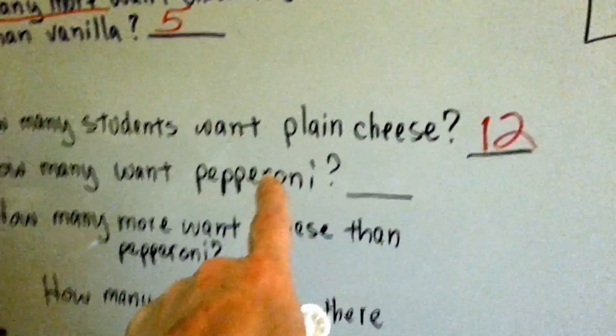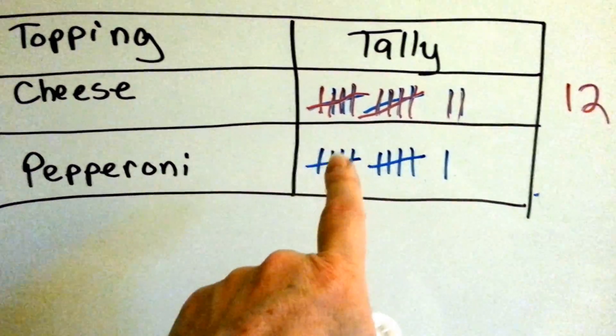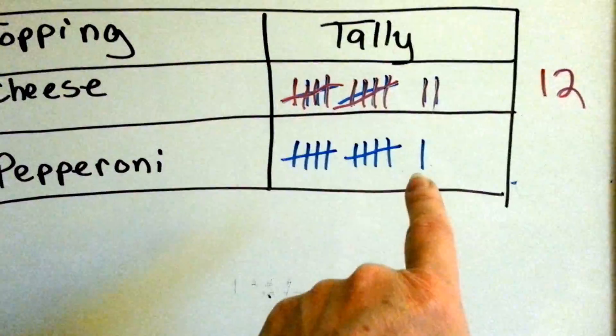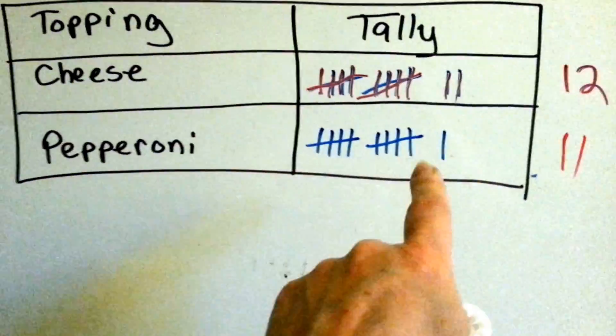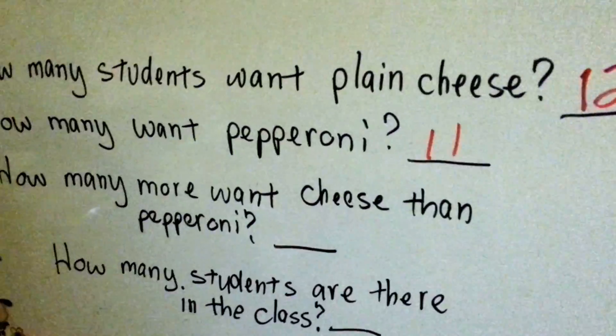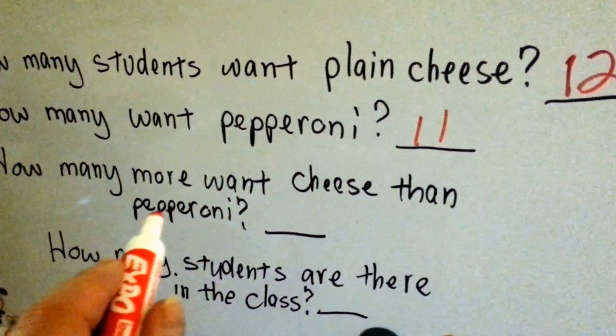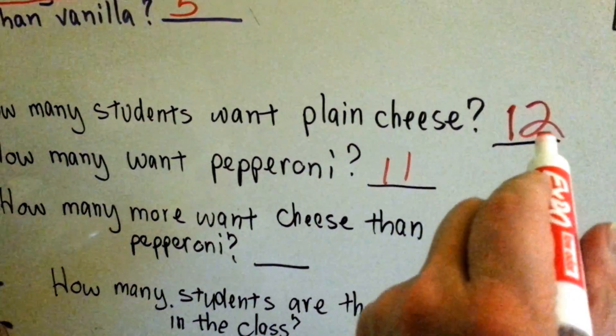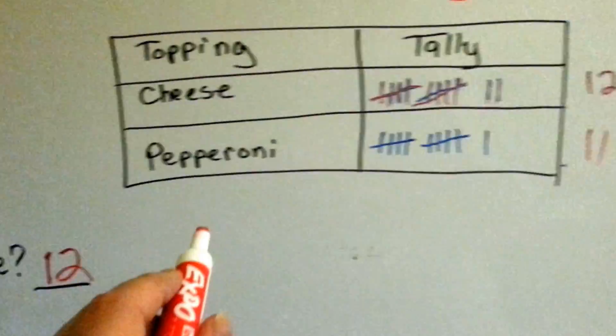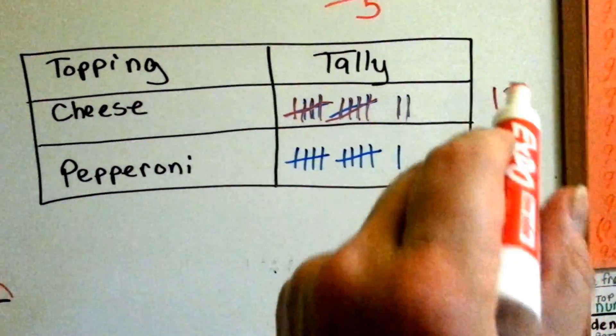How many wanted pepperoni? Well, let's look at the pepperonis. 5, 10, and one more is 11. 11 children wanted pepperoni. So we're going to put that in the answers, in the answer line. How many more want cheese than pepperoni? 12 want cheese, 11 want pepperoni. How many more want cheese than pepperoni? Just one. 11, 12.